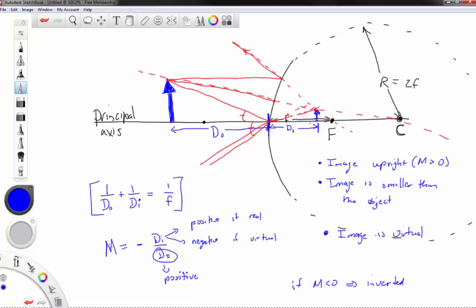If M is greater than zero, if M is greater than one, then image is larger than object. And if, on the other hand, M is less than one, then image is smaller than object. Okay, so that's how you interpret all this stuff that you're getting out of here.